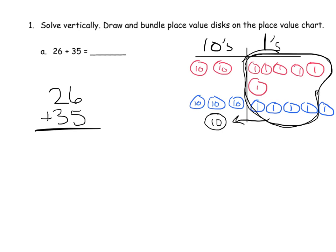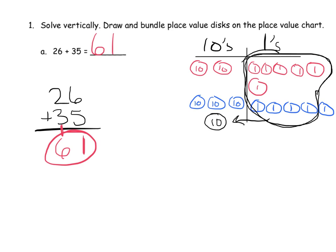Six plus five equals eleven, meaning we can bundle ten ones into one ten with one left over. On the standard algorithm, we write 1 in the ones place and carry 1 to the tens place. Then we have two plus three plus one, which is six tens, giving us an answer of sixty-one.